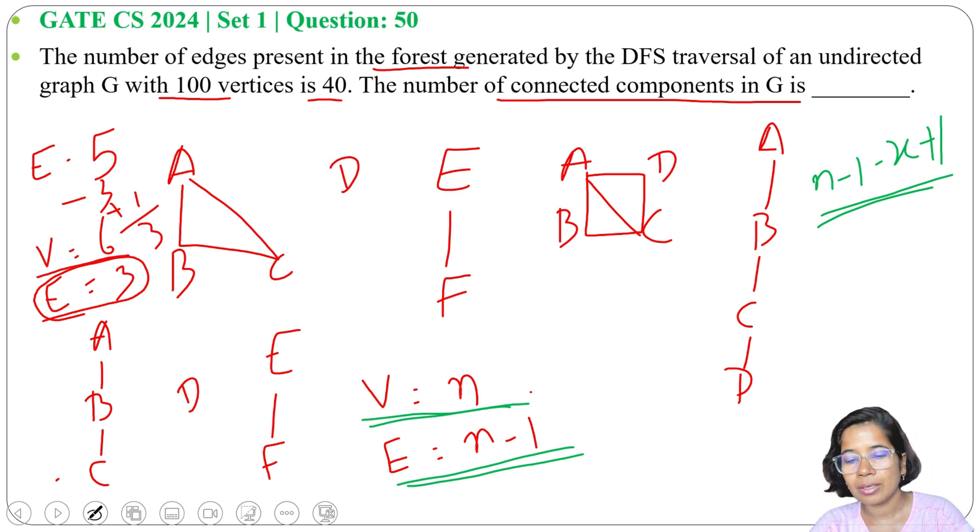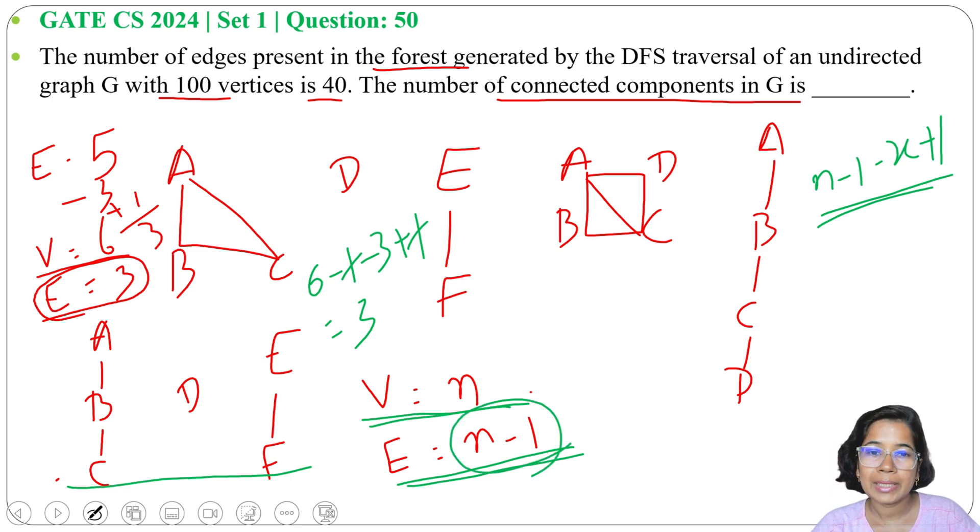In this example, here number of vertices is 6. So number of edges should be 6 minus 1, right? And how many edges we have? 1 to 3. So minus 3 plus 1. There are 3 connected components. So if the graph has 1 connected component, then there will be n minus 1 edges. But if it's a DFS forest, graph is disconnected, it has multiple components. Then how will we find the number of components? So number of edges should be in the DFS tree minus how many edges are present plus 1, right?